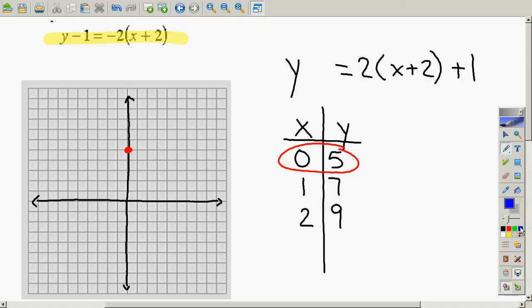Our next point that I'll plot is 1, 7. 1 to the right, 7 up. It should go right there.